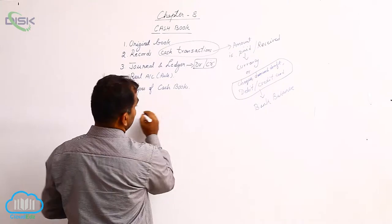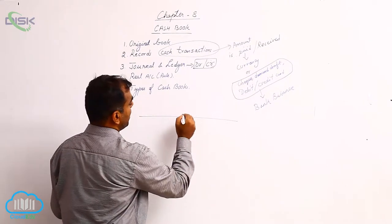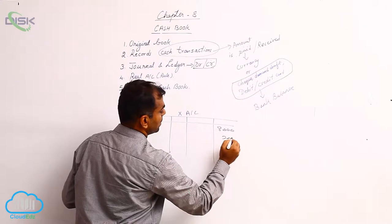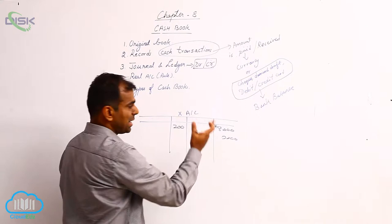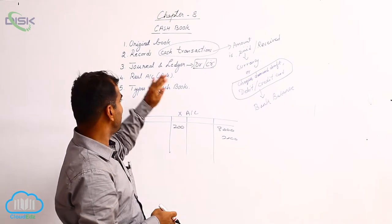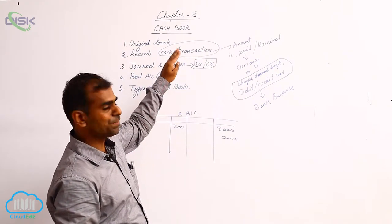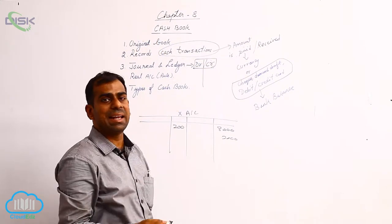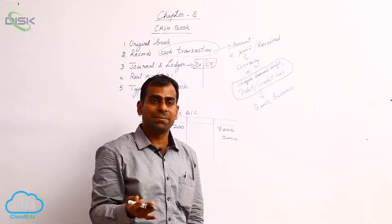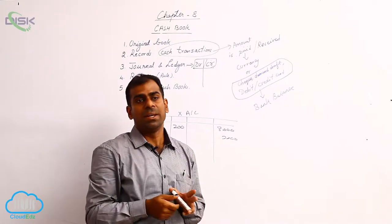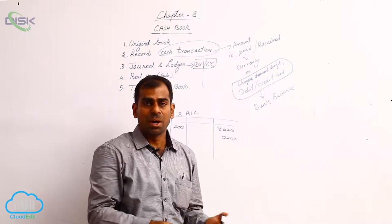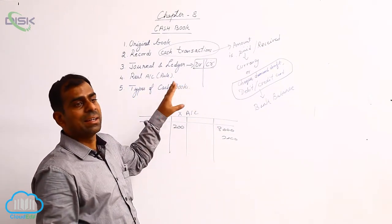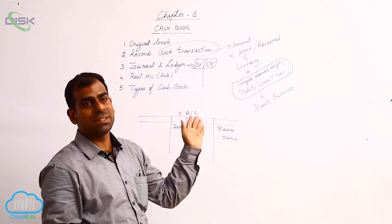Just like a normal ledger, where you write an account, put some amounts on the debit and some on the credit, and then balance them — similarly in the cash book, the balancing figure will be either cash in hand or cash overdrawn. Cash in hand means the business is having cash or currency with it. Cash overdrawn means the business has used cash more than what it has, and that money could have come from borrowing which it needs to repay.